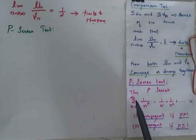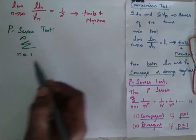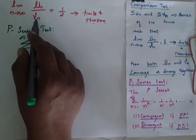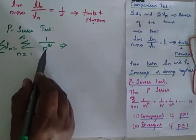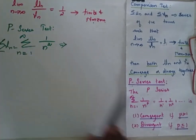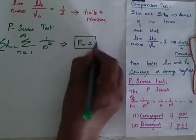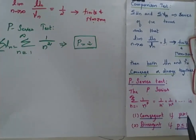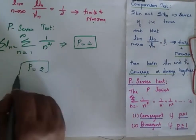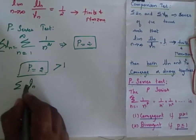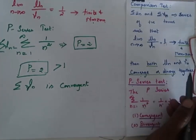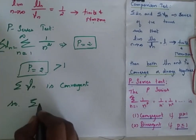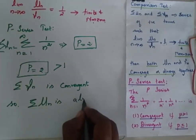When I apply the p-series test, I look at the summation from n = 1 to infinity of vn, which is 1 by n squared. Comparing this with 1 by n power p, my p is equal to 2. Since p = 2 is greater than 1, the series is convergent. Therefore, summation vn is convergent. Since both un and vn converge or diverge together, by the comparison test, we say that summation un is also convergent.